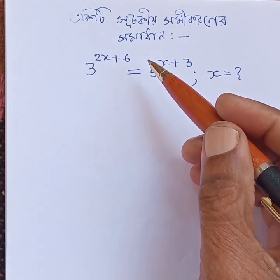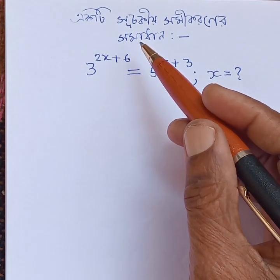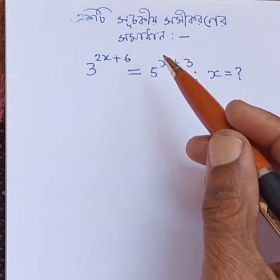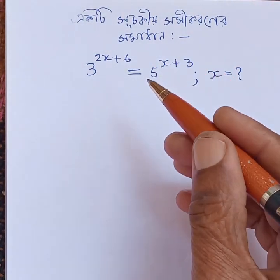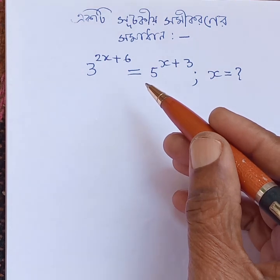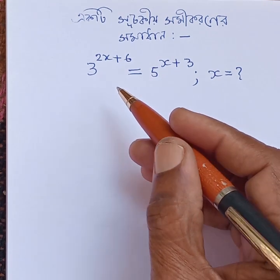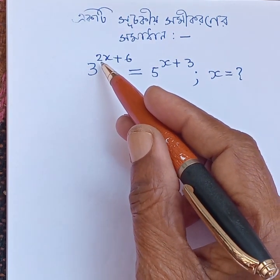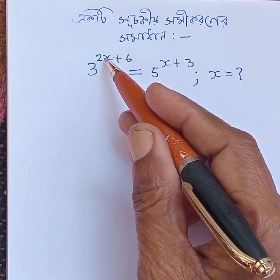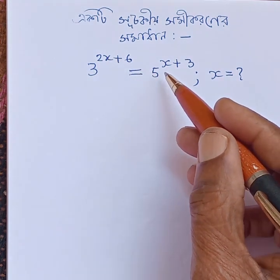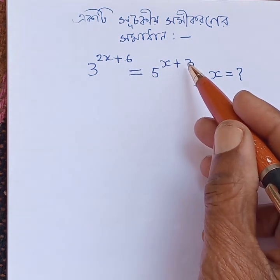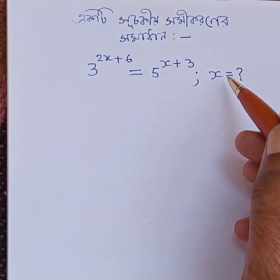In this video, I am going to show you the solution of 3 to the power of x plus 6 is equal to 5 to the power of x plus 3. What is the value of x?